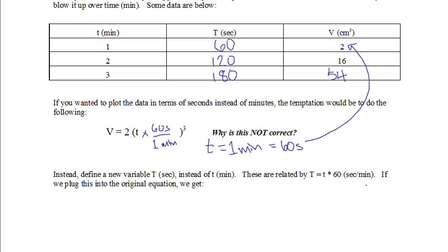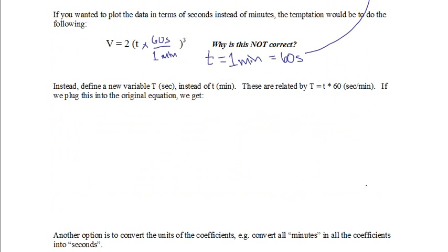So if we plug this with its new conversion factor into the equation, what we get now is our volume v, now remember that's in centimeters cubed, is equal to our coefficient 2, now remember the coefficient 2 is in centimeters cubed per minute cubed, times what's now big T over 60 cubed. And remember this 60 here is in units of second per minute.